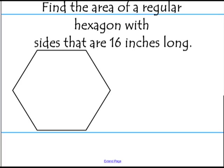So, let's see how we're going to solve this one. We have a regular hexagon, so a regular polygon. We know the formula for area is one half apothem times the perimeter.